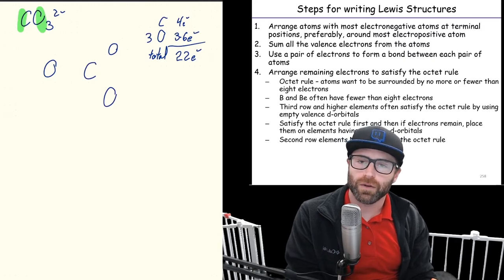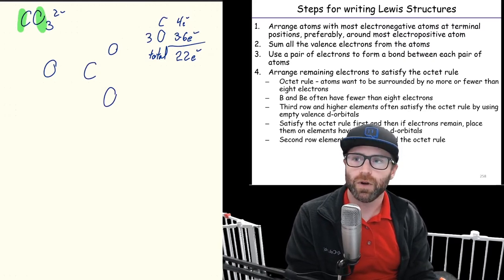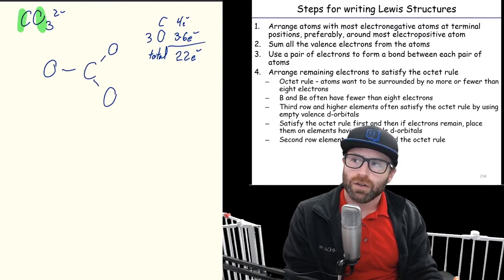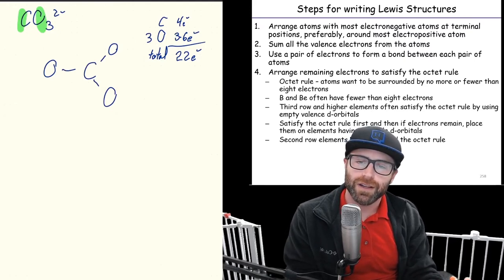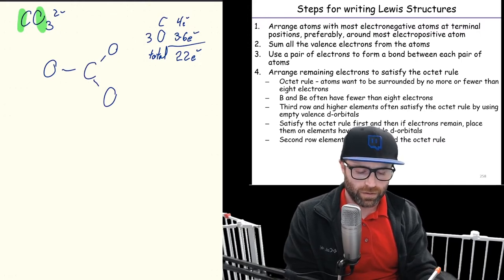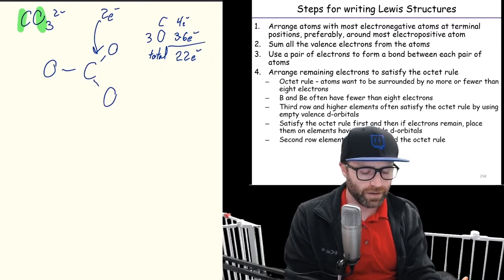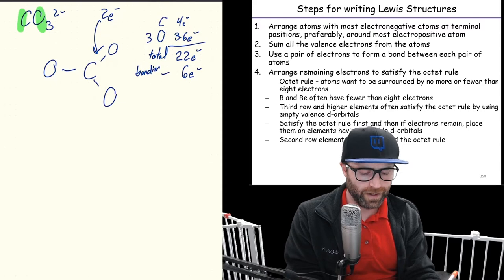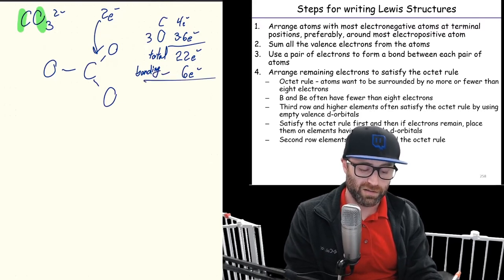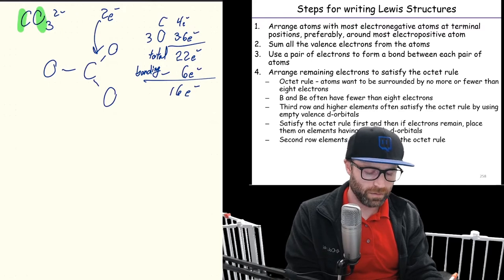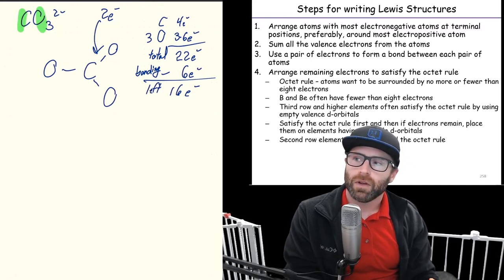Now we go to step three: use a pair of electrons to form a bond between each pair of atoms. Each line I draw is designating a bond, and each bond is worth two electrons. We drew three bonds for six electrons. So we need to subtract the six bonding electrons from our 22 total: 22 minus 6 is 16. We have 16 electrons left.